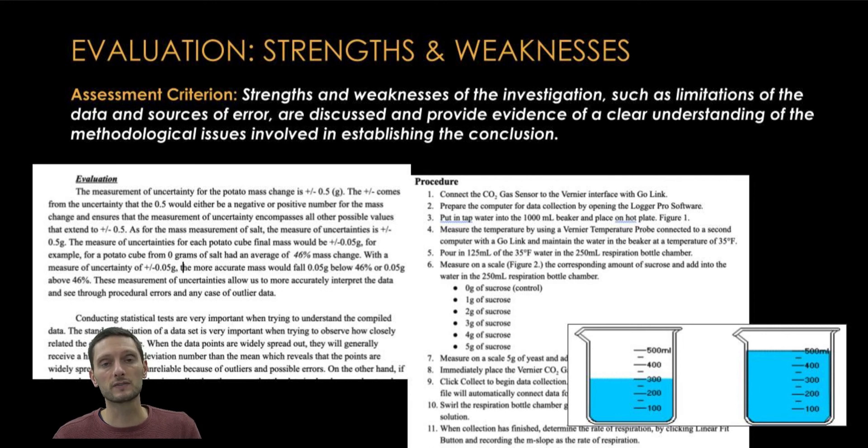Typically, if things are left too long or a time expires or too much of something is added, that would be an example of a human error. A procedural error is going to be something that's incorrect or difficult in the procedure, is wrong in the procedure, and really doesn't allow the collection of precise quality data. For example...